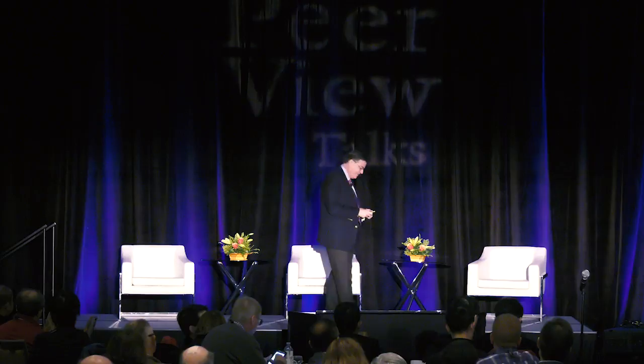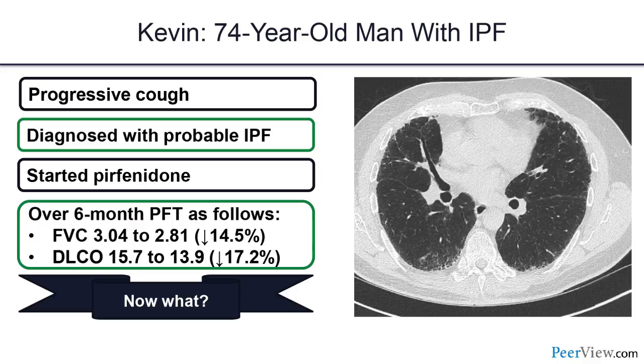This world has drastically changed over the last few years. A real case seen last week: a gentleman diagnosed with IPF at 74, meeting criteria for age and traction bronchiectasis, on pirfenidone for six months. His FVC dropped 14.5 percent and DLCO dropped 17.2 percent. The question is: now what? What is the optimal approach when a patient progresses on therapy? That remains unclear.